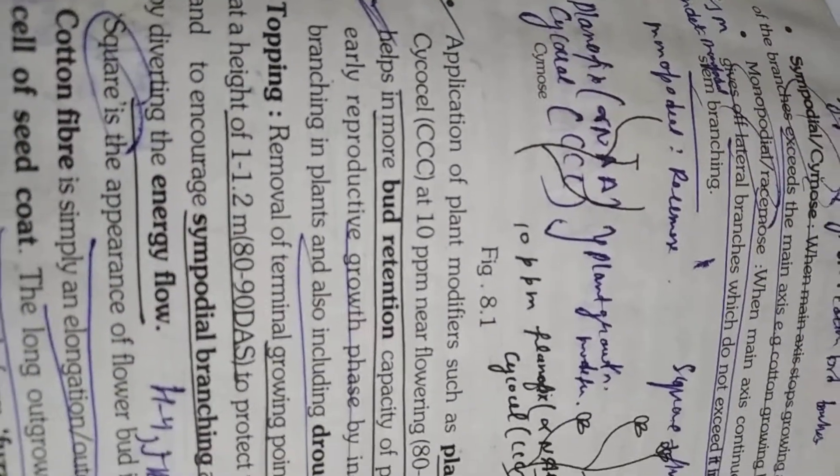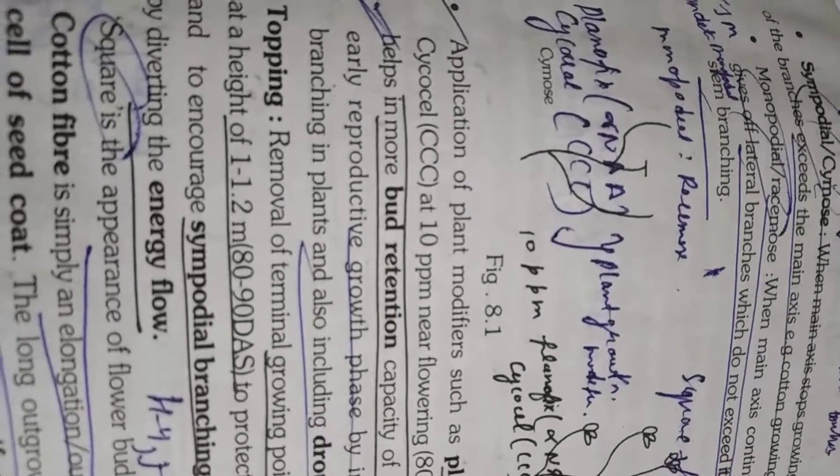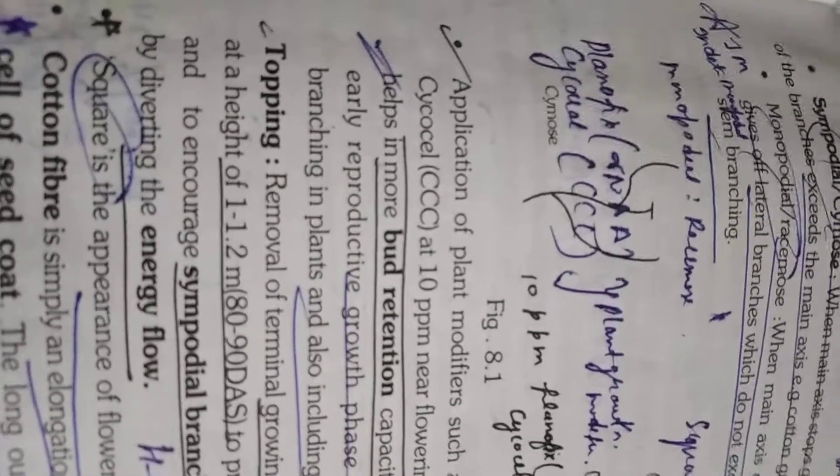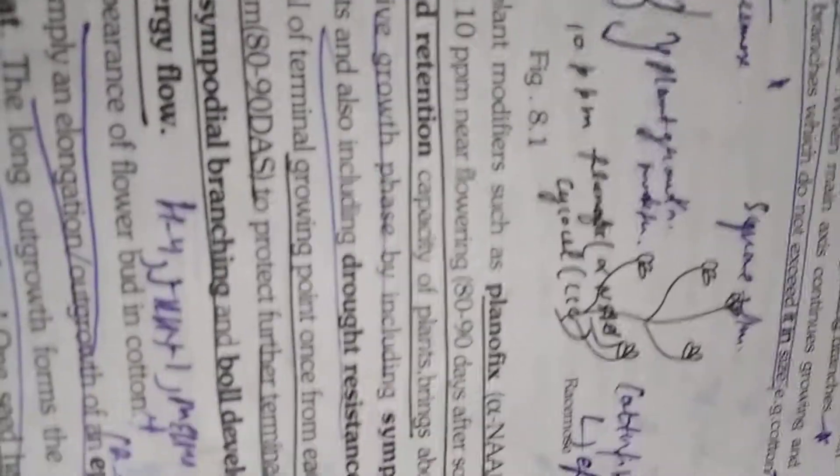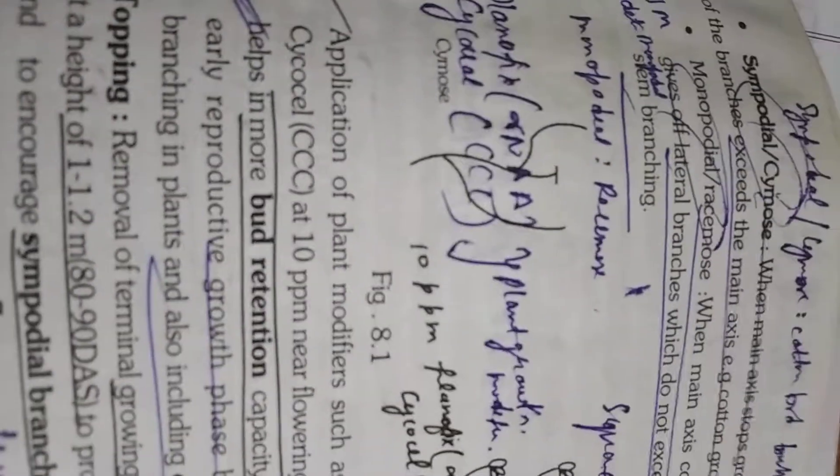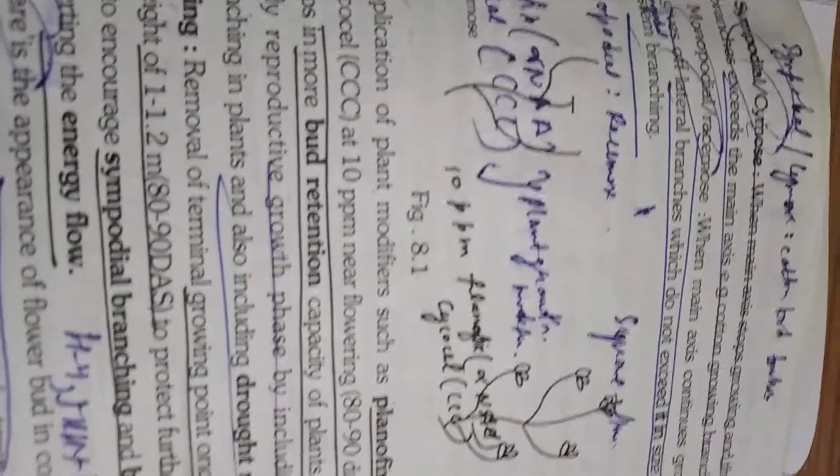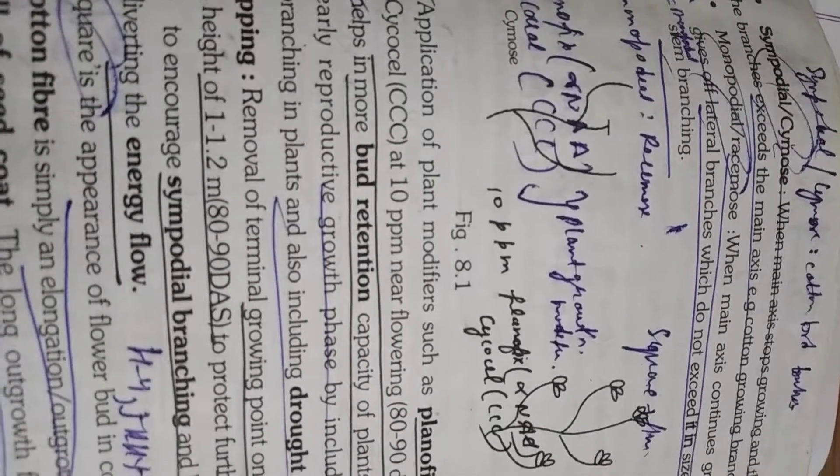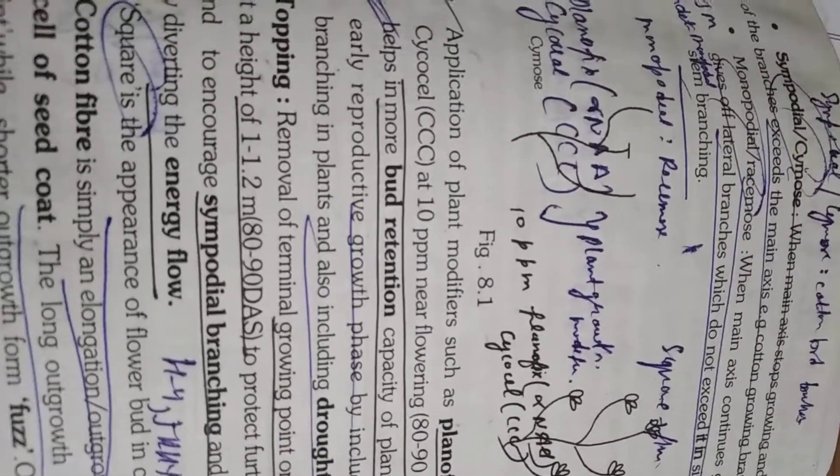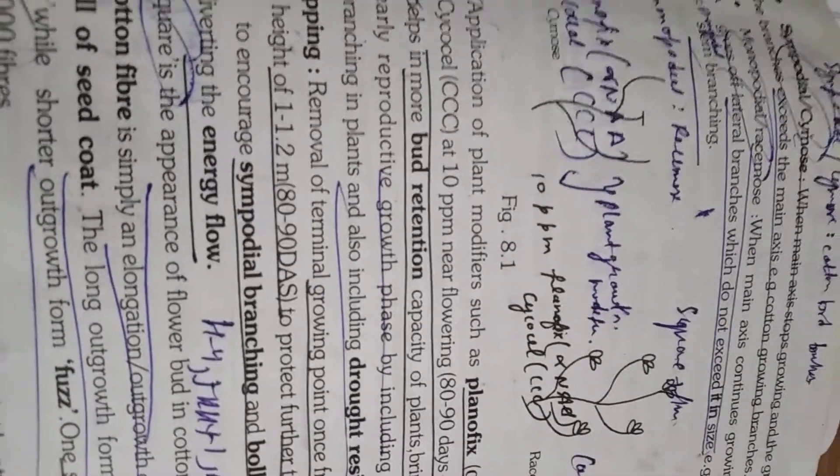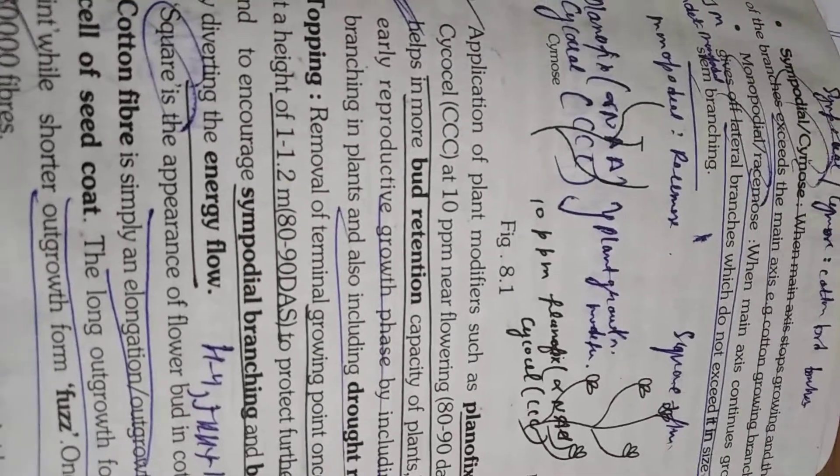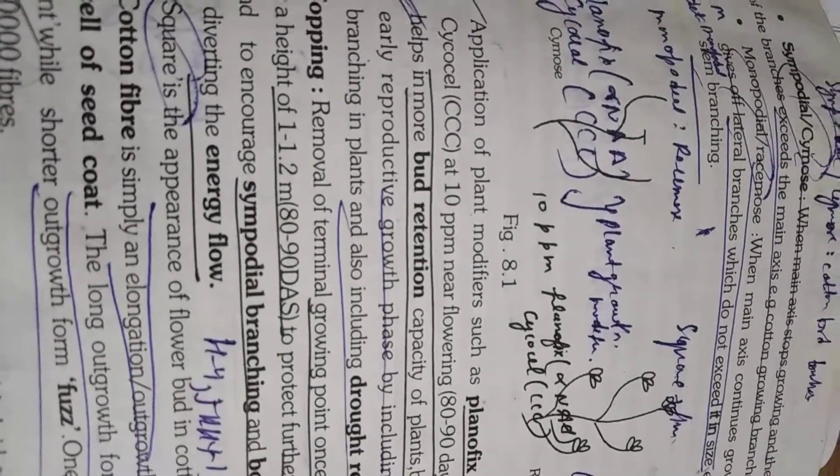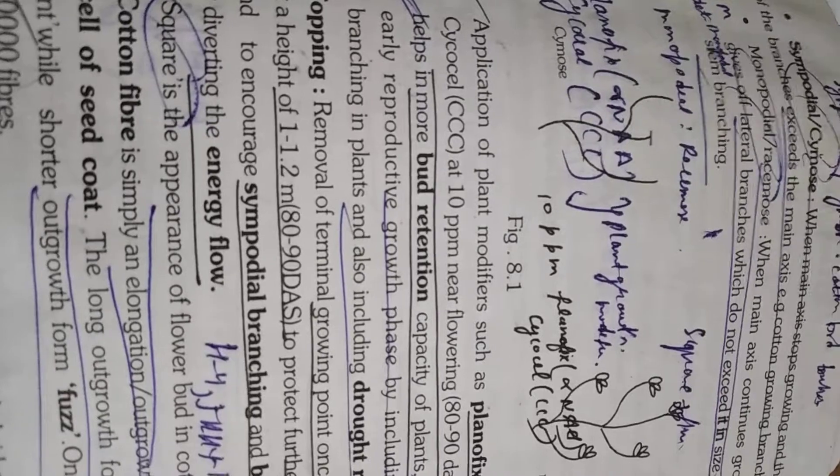Students here is the diagram. First is cymose, you see figure 8.1. First is cymose inflorescence. Second is your racemose inflorescence. So what is sympodial or cymose inflorescence? When main axis stops growing and the growth of branches exceed the main axis, it is called sympodial or cymose. This was the correct answer. And it is found in cotton. Please remember it. Monopodial and sympodial, these all are inflorescences found in cotton.